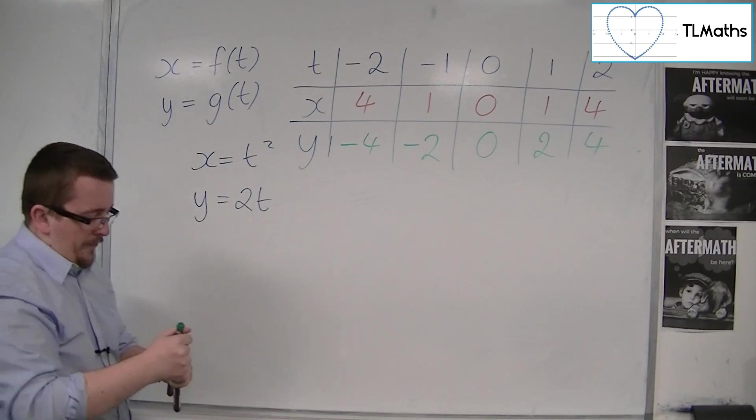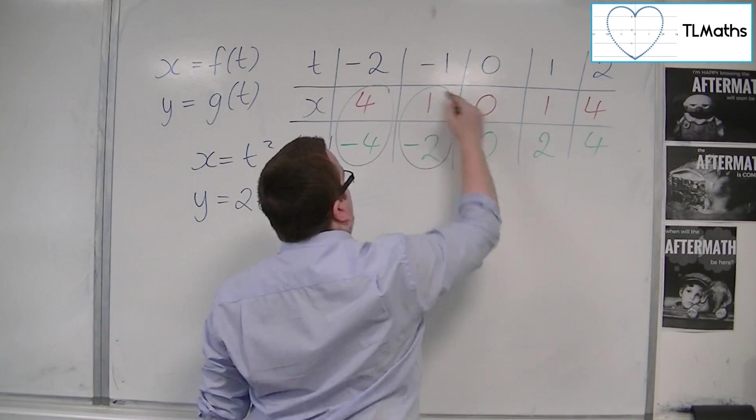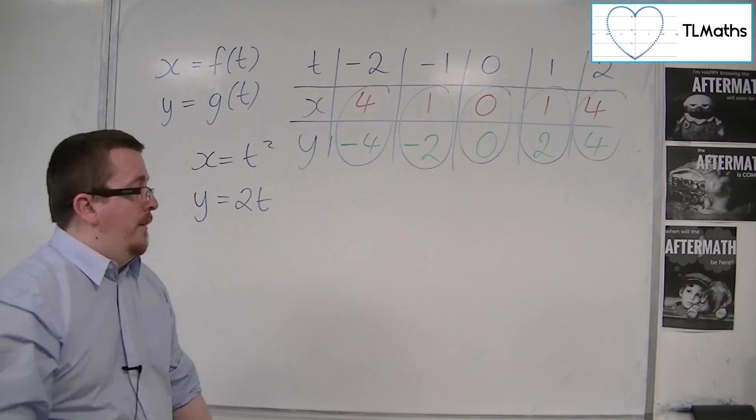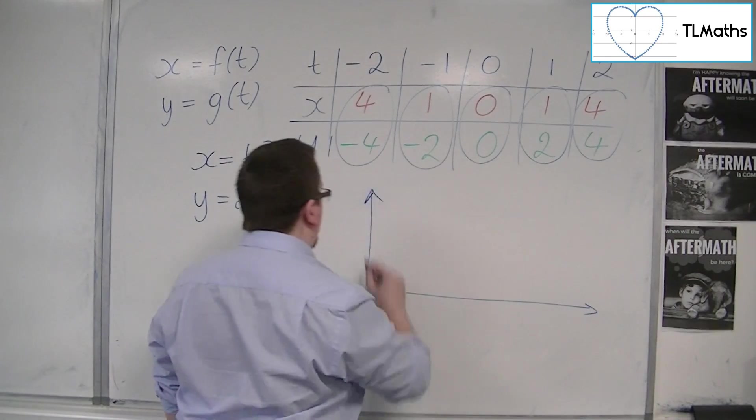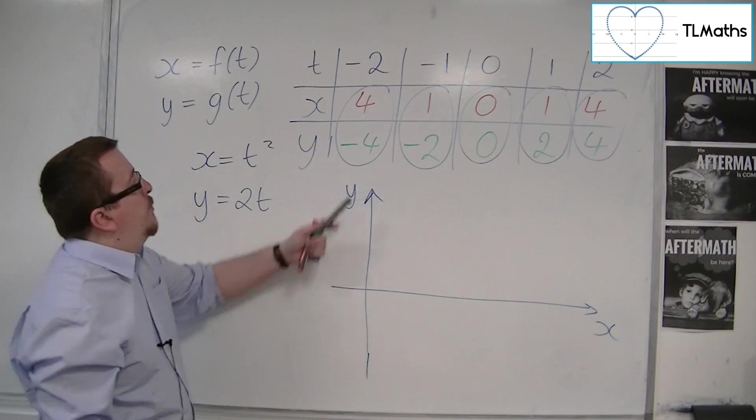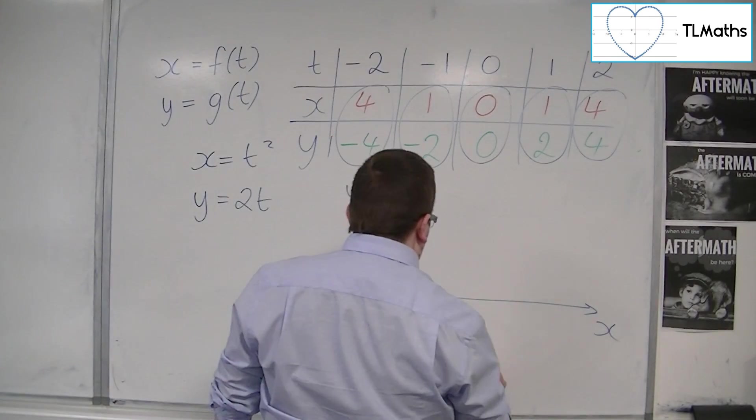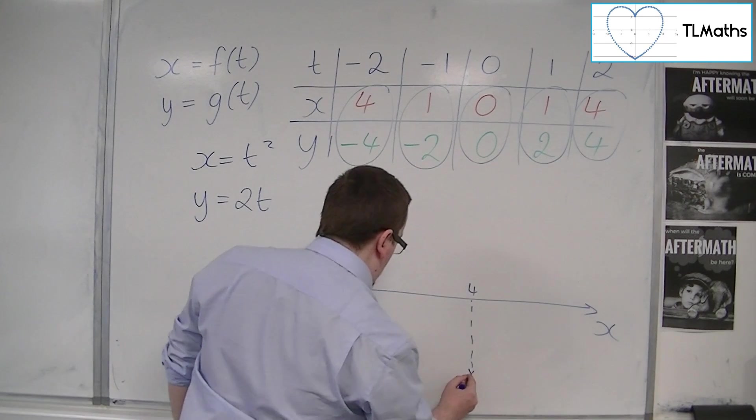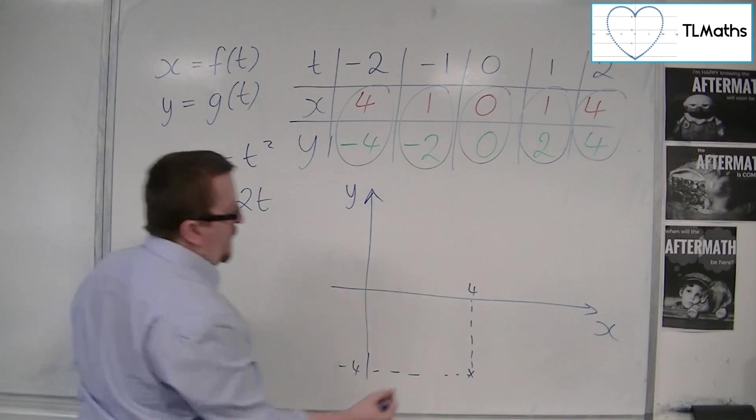I can now plot on a graph. Here's y and here's x. So my first coordinate that I have is 4 minus 4, so 4 along and 4 down, so that could be 4, that's minus 4. That's my first point there.